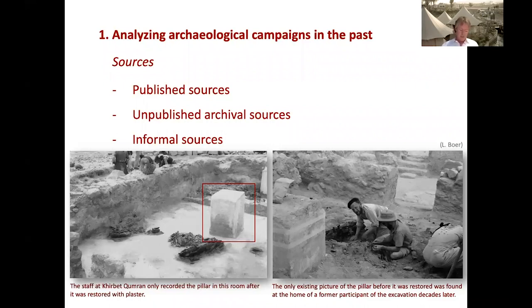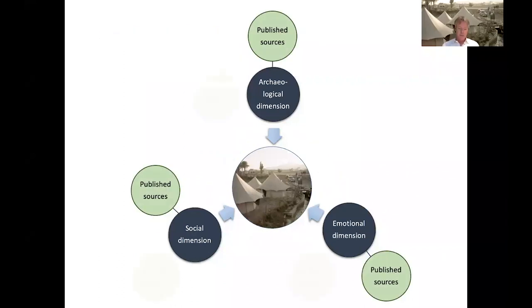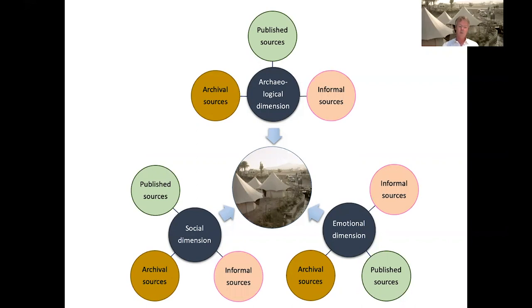But next to that, it also gives us information about the expedition's recording policy — what to record and what not, and the decisions they made. So now we can compare them. In contrast to the first types of sources — the published sources and unpublished archival sources — which often describe the archaeological and social dimension of the excavation, the informal records do not only reinforce those dimensions, but they are also able to provide the required data for the emotional dimension. For obtaining a comprehensive and balanced view of the past excavation, it is crucial to include all three dimensions, thereby obtaining as many published sources, unpublished archival records, and informal documentation as possible.